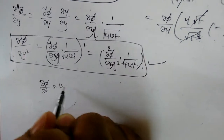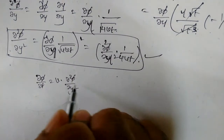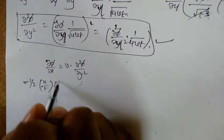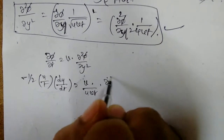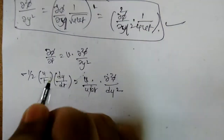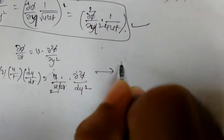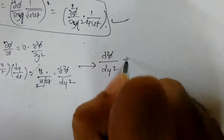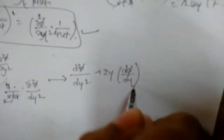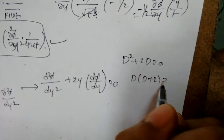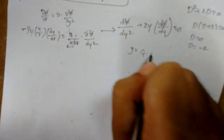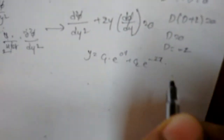This is the standard ODE: d²φ/dη² + 2η dφ/dη = 0. Writing D for the operator, D(D + 2η) = 0 has solutions D = 0 and D = −2η. From the standard formula, the general solution is φ = C₁e^(0·η) + C₂e^(−2η), i.e., φ = C₁ + C₂·(integral form).